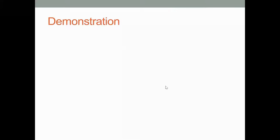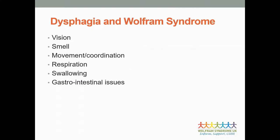There are various symptoms of Wolfram Syndrome that can disrupt the eating, drinking and swallowing process. Looking back at the four stages of the swallow: the pre-oral stage utilises vision and smell, and optic atrophy - a symptom of Wolfram Syndrome - can impact that stage. Ataxia can disrupt the physical activity of bringing food or drink to the mouth as well as the coordination of the swallow itself. Many people seen in clinic also describe gastrointestinal issues including acid reflux, which I'll cover next.